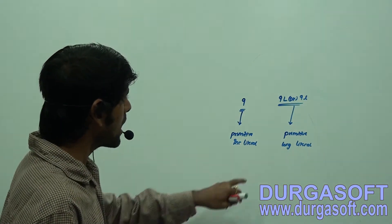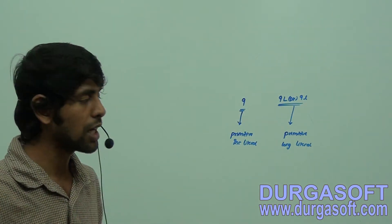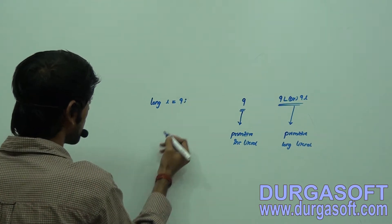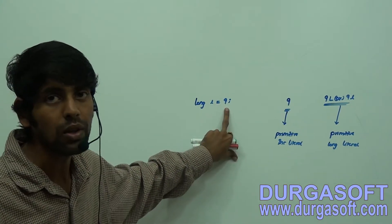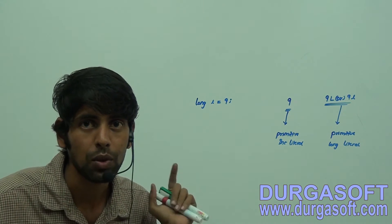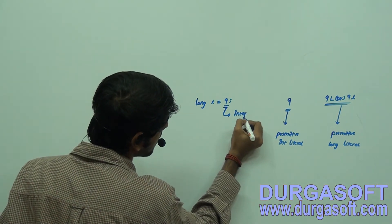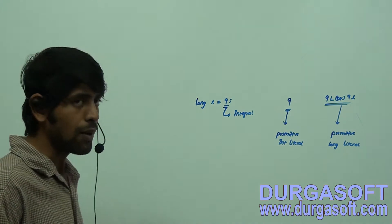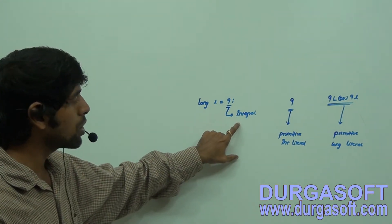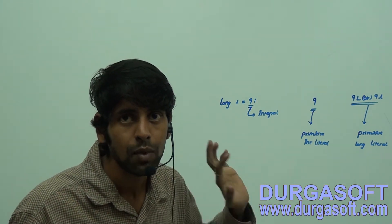Now, in order to convert this primitive int literal to a primitive long literal, consider: long l = 9. I want to convert that literal type from int primitive to long primitive. By default, the int literal is an integral literal. What happens here is 32 blocks of data are being assigned to 64 blocks.